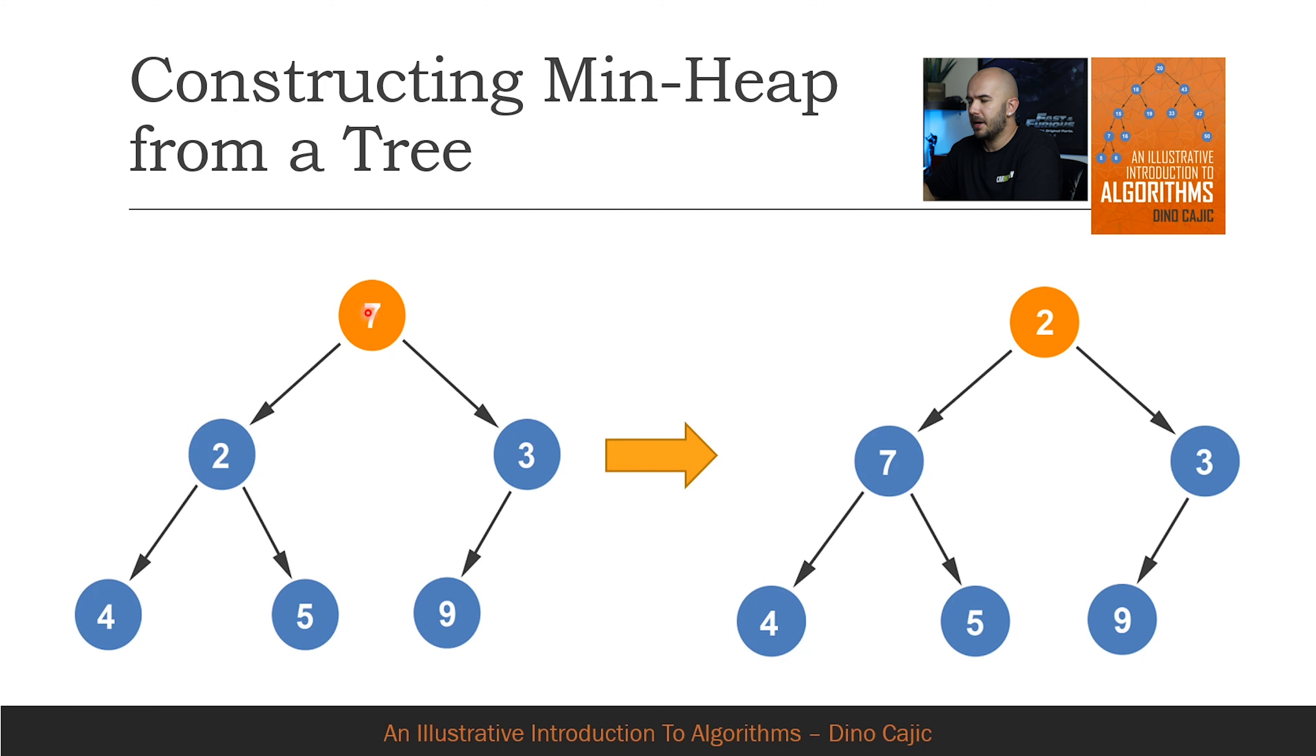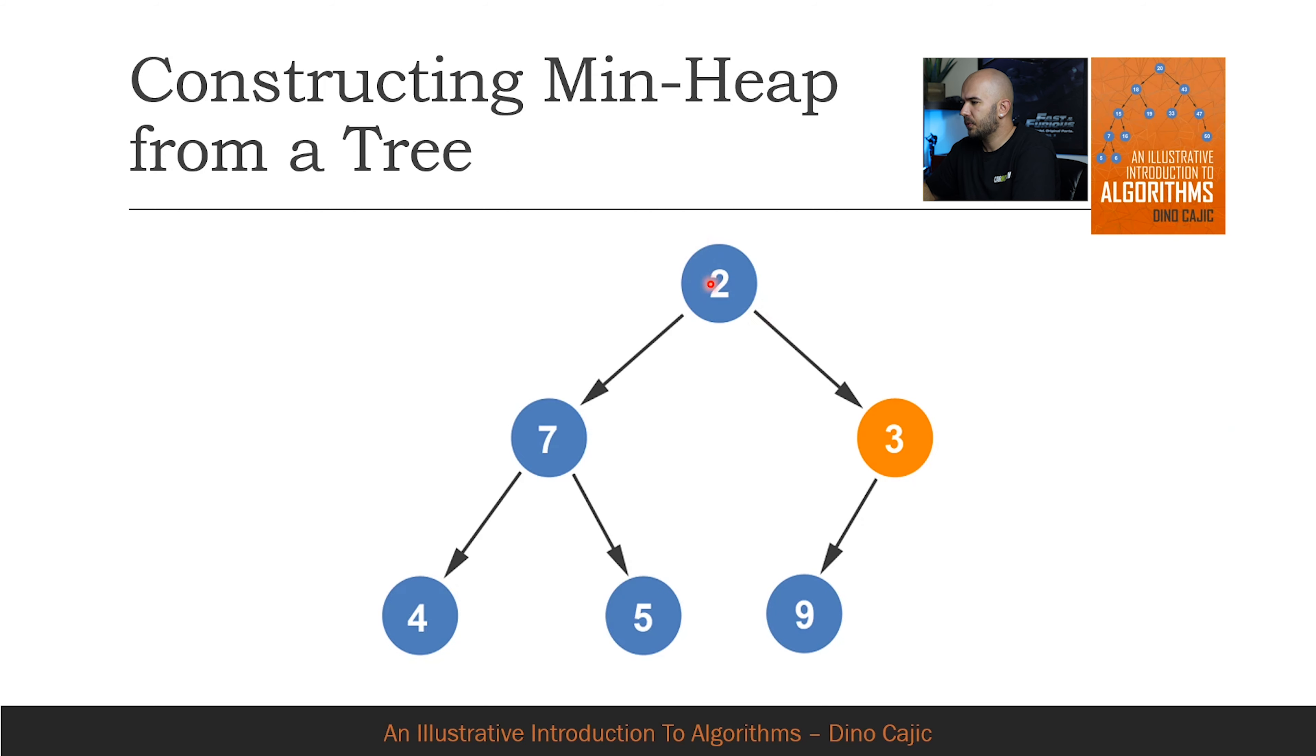Next, 7 is compared to 2. Since 2 is smaller than 7, the two nodes are swapped. Now that we've reached the root node, we must iterate through the heap once more to see if we finish generating a min heap. So we'll repeat the procedure again.